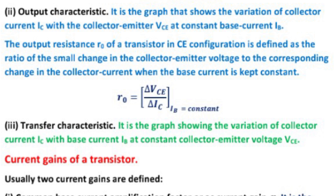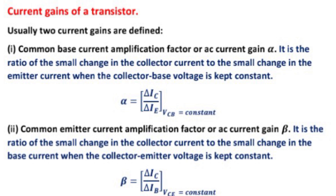Current gains of a transistor. Usually two current gains are defined. First is common base current amplification factor, also called AC current gain alpha. It is the ratio of the small change in the collector current to the small change in the emitter current when the collector base voltage is kept constant. Alpha equals delta IC upon delta IE at constant VCB.